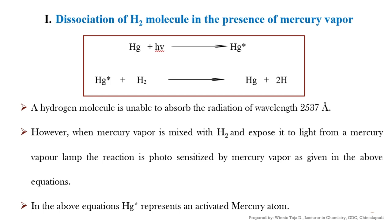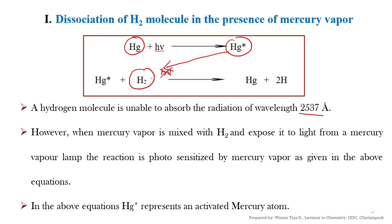In the first example — dissociation of hydrogen molecule in the presence of mercury vapor — the hydrogen molecule is unable to absorb light radiation. However, when mercury vapor is mixed with hydrogen and exposed to light from a mercury vapor lamp, the reaction is photosensitized by mercury vapor as shown in the equation. The mercury vapor absorbs the light, and the energy gained by mercury is transferred to the hydrogen molecule so that it gets dissociated into hydrogen atoms. Here, the mercury atom acts as the photosensitizer.